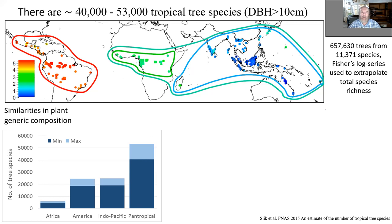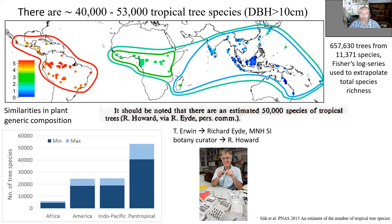There is an interesting history to this estimate because the first people who actually asked these questions were entomologists, specifically Terry Erwin, who was interested in how many insect species there are in the tropics. He continued in a more than 100-year-old tradition of these estimates by looking at how many insects are associated with one tree species in the tropics, and then he wanted to multiply that by the number of tree species, but couldn't find anything in the literature. At the time, he was the entomology curator at the Museum of Natural History of the Smithsonian Institution in Washington.